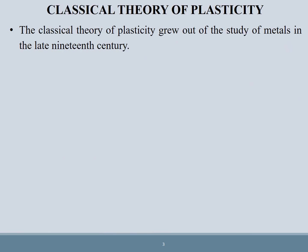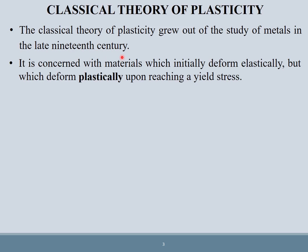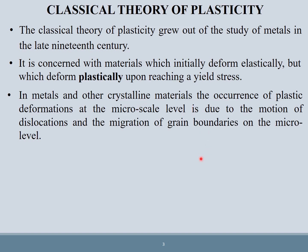Classical theory of plasticity grew out of the study of metals in the late 19th century. It is concerned with materials which initially deform elastically but deform plastically upon reaching a yield stress. In metals and other crystalline materials, the occurrence of plastic deformations at the micro-scale level is due to the motion of dislocations and the migration of grain boundaries. Dislocations move, and because of that movement we have permanent deformation.